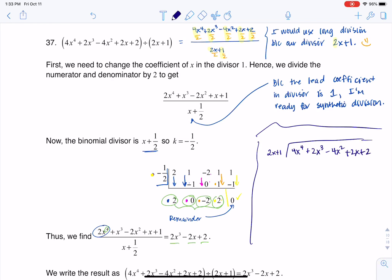I want you to see that long division works as well. So it's always a game of lead coefficients, right? What do I need to multiply 2x by to get up to 4x to the 4th? Well, that is going to be 2x cubed,